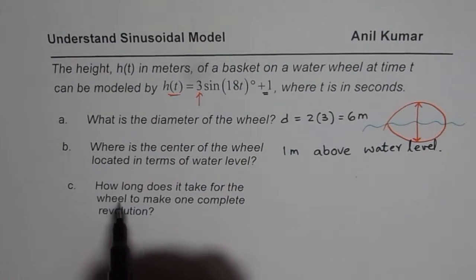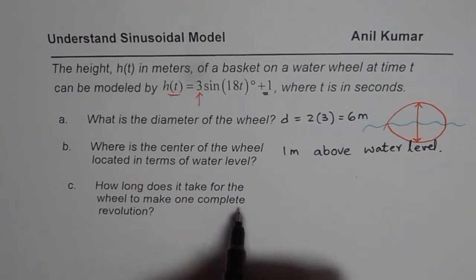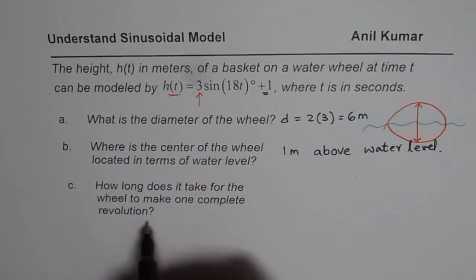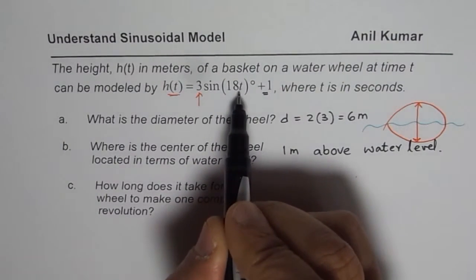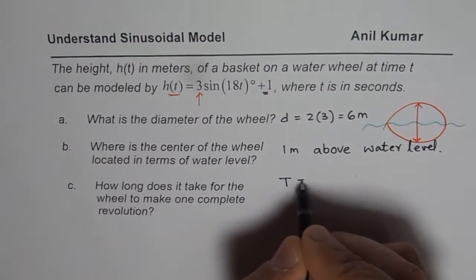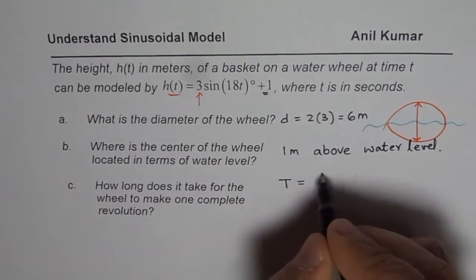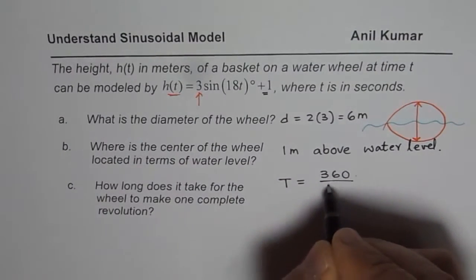And then the question is, how long does it take for the wheel to complete one revolution? Now that gives you the time period, 18t. So one complete revolution T can be calculated by dividing 360 degrees, all this is in degrees, by 18.